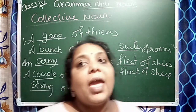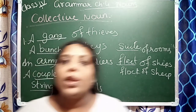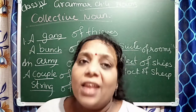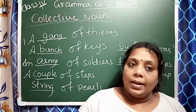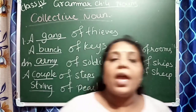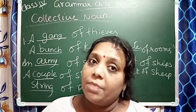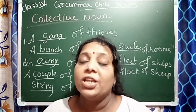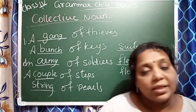अभी exercise के बाद एक activity है — alphabetic blackboard में alphabetic order में लिखा है, उसमें से कम से कम 4 या 5 collective nouns बनाकर लिखना है। जिसको भी collective noun समझ में नहीं आया या कोई doubt है, comment section में send करें। चैनल को subscribe करें, bell icon press करें ताकि हर new video का notification मिलता रहे। Thank you.